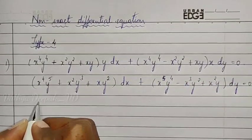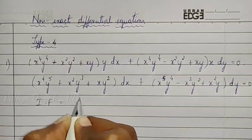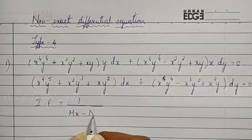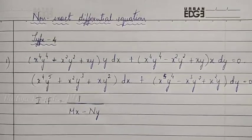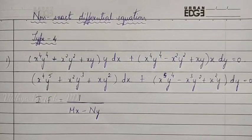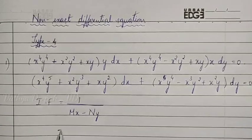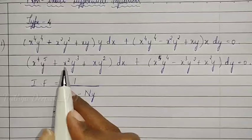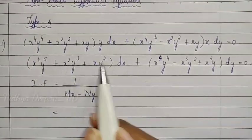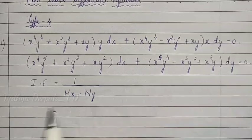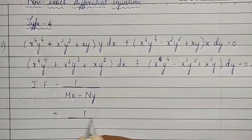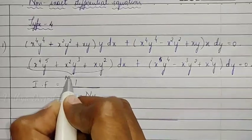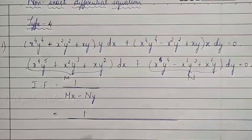Now we need to find the integrating factor. The integrating factor formula is 1 by (xM − yN). We will multiply x with M and y with N. So what is our M and N? In the M dx + N dy form, this is M and this is N.